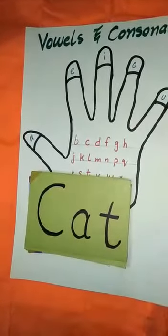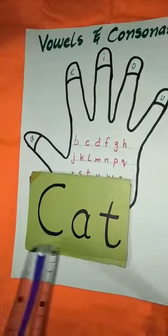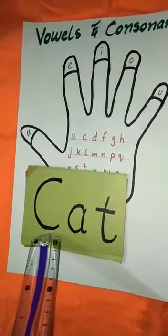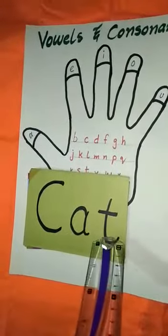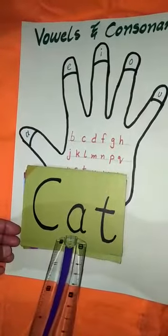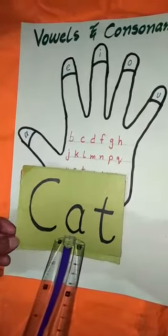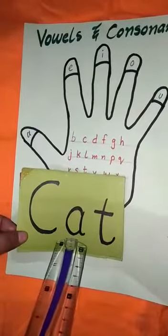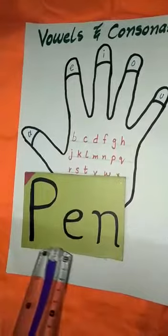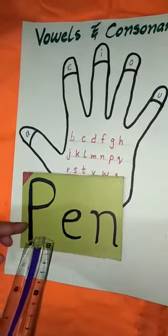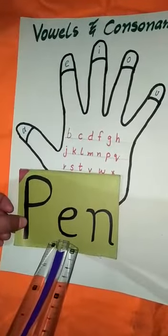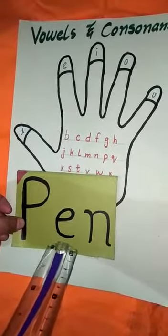In this flashcard, this is the word cat, and there is a vowel A. What is this? A. And next one has E vowel, the second vowel E.